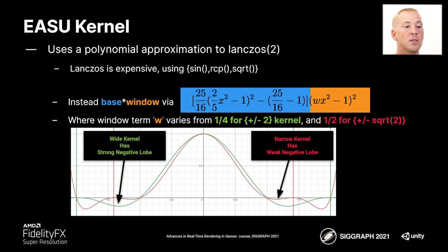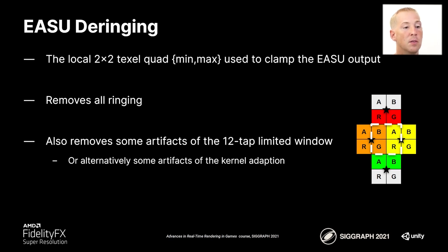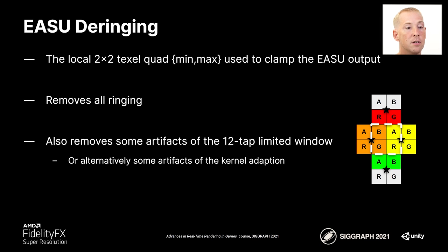Once EASU is finished with its filtering, we go on to the de-ringing step, where we take the local 2x2 texel quad's min and max of RGB and use that to clamp the EASU output. This removes all the ringing. It also removes artifacts of the limited 12-tap window. Therefore, when scaling is larger, we start seeing clipping of the window, so it's best to run the de-ringing step to minimize that.